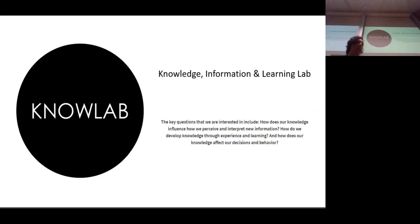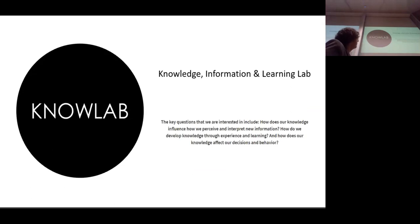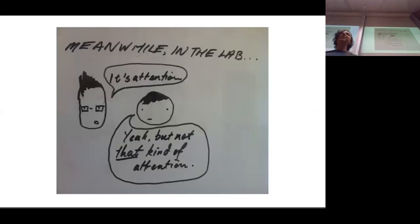So then I came here and I had the opportunity to set up my lab, the Knowledge Information and Learning Lab, where I summed up pretty well on the initial blurb that I wrote about what my key questions are. So how does knowledge influence how we perceive and interpret new information? How do we develop knowledge through experience? And how does our knowledge affect our decisions and behavior? I think that does describe pretty well what I'm interested in. So the lab used to be in the Redmond Barry building. I shared the lab with Piers. This is what our students thought about our joint lab meetings. Piers is on left. I'm on the right. This seems to be every lab meeting, I think, in those first few years.